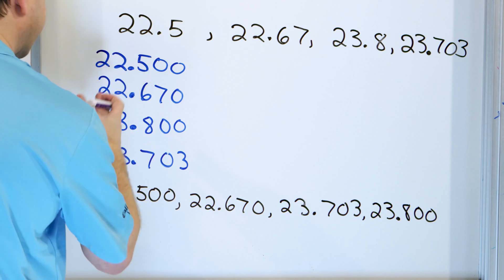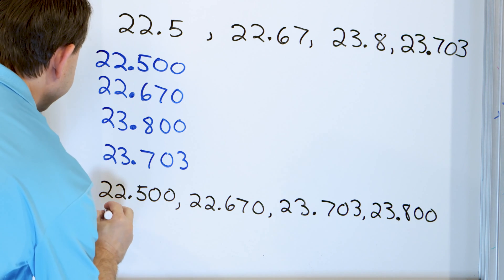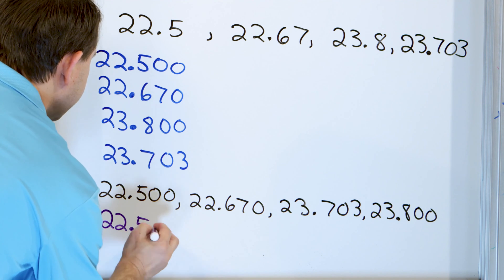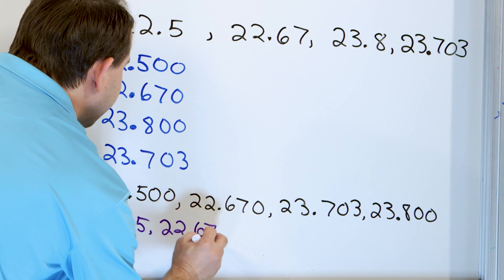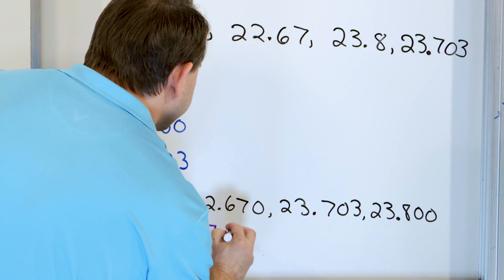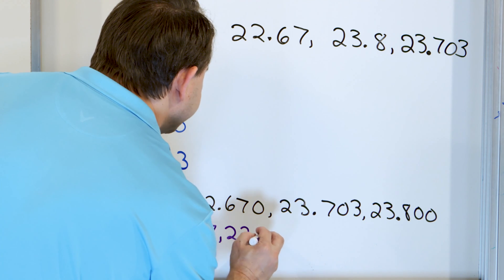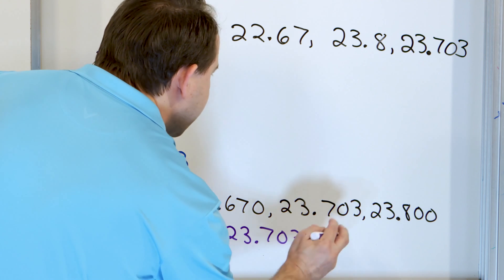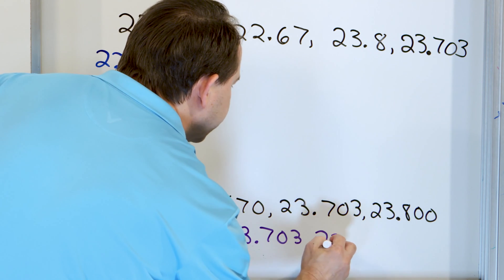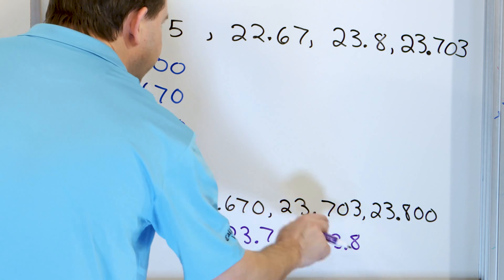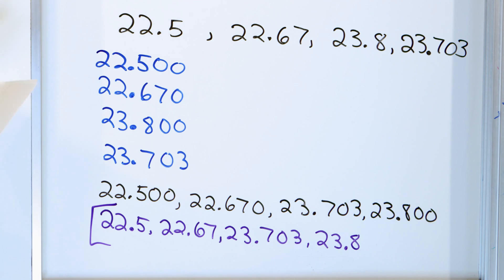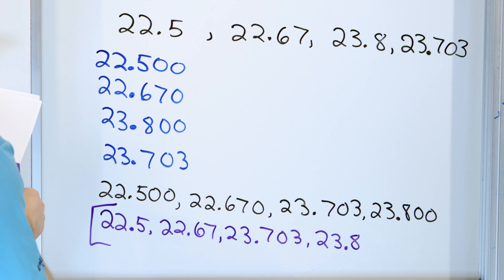The final step is to convert the numbers back to what was given in the problem. 22.500 was really 22.5. 22.670 was 22.67. 23.703 stays as 23.703. And 23.800 was written as 23.8. Double-checking: 22.5, 22.67, 23.703, 23.8. That is the final answer.